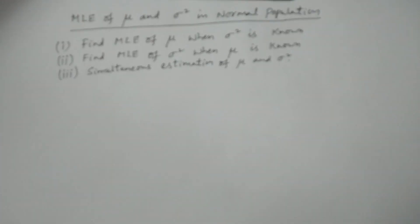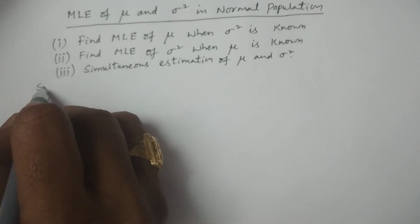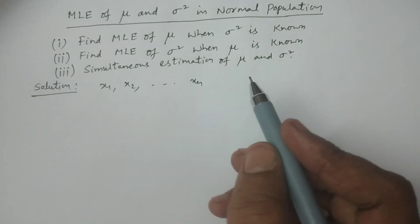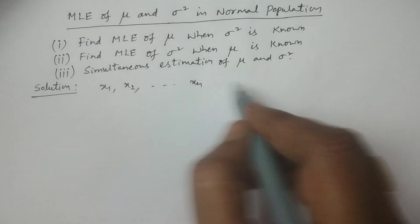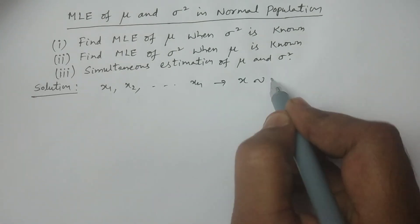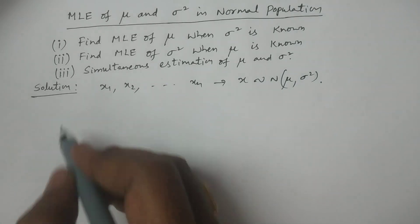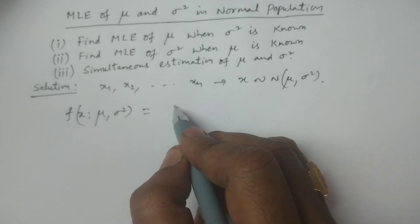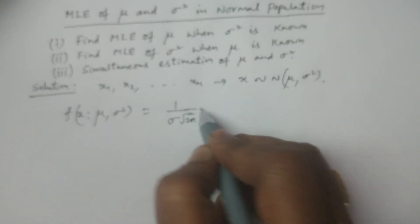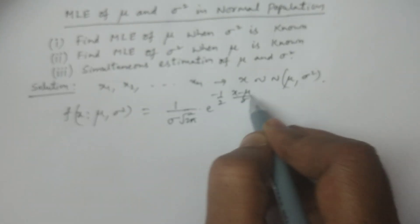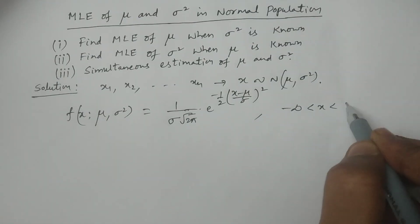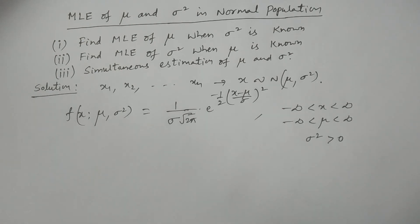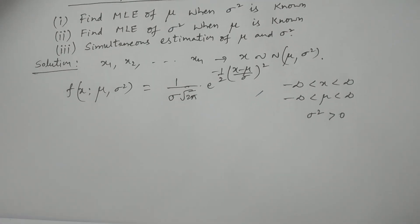A particular sample x1, x2, ..., xn is drawn from the normal population. X follows a normal distribution with mean mu and variance sigma square. The probability density function is f(x; mu, sigma²) = (1 / sigma√(2π)) * e^(−(1/2) * ((x−μ)/σ)²), where −∞ < x < ∞, −∞ < μ < ∞, and σ² > 0.